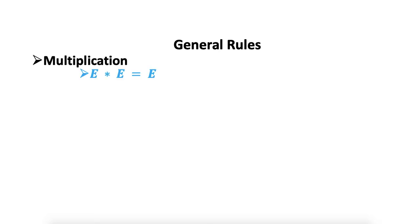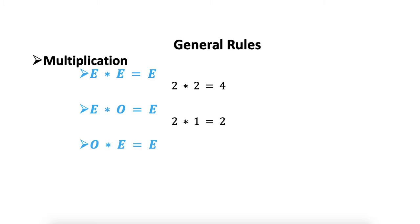Now let's see multiplication. This is a simple case: when we have only one even number, the result is even. The product of two evens is even (2 times 2 equals 4), the product of even and odd is also even (2 times 1 equals 2), and odd times even is also even (1 times 2 equals 2). But when all integers are odd, the result is an odd integer — for example, 1 times 1 equals 1. The takeaway is: we get an odd result only when all integers in the multiplication are odd; in every other case, we get an even integer.